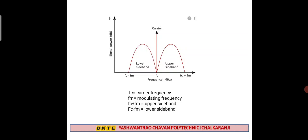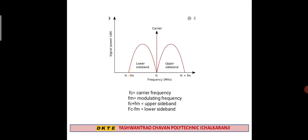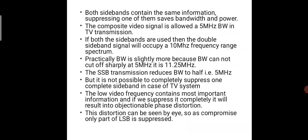For video, we use amplitude modulation, giving us two sidebands — a lower sideband and an upper sideband. Both sidebands contain the same information, so suppressing one of them saves bandwidth and power. When we use the composite video signal, the bandwidth is 5 MHz. When using both sidebands, the bandwidth is doubled: 5 MHz plus 5 MHz equals 10 MHz.